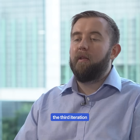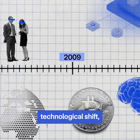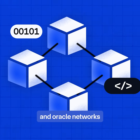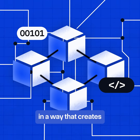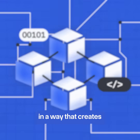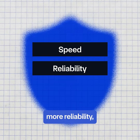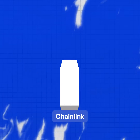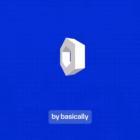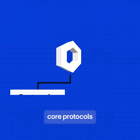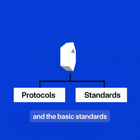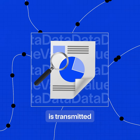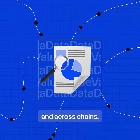Then you have the third iteration of this technological shift, which is blockchain, smart contracts, and Oracle networks all interacting in a way that creates greater speed, more reliability, and more trust in how transactions work. Chainlink fits into this third group by basically creating the core protocols and the basic standards for how data and value is transmitted into, out of, and across chains.